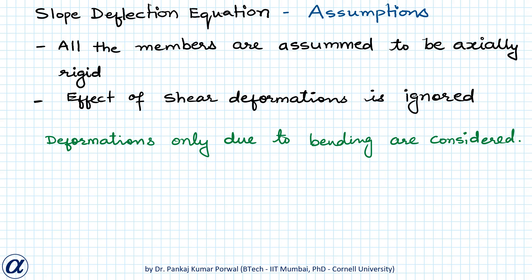The main assumptions of the slope deflection method are: first, all members are axially rigid, meaning their length cannot change, so there is no displacement at a node along the length of a connected member. Second, effects of shear deformation are ignored, so only deformations due to bending are considered.